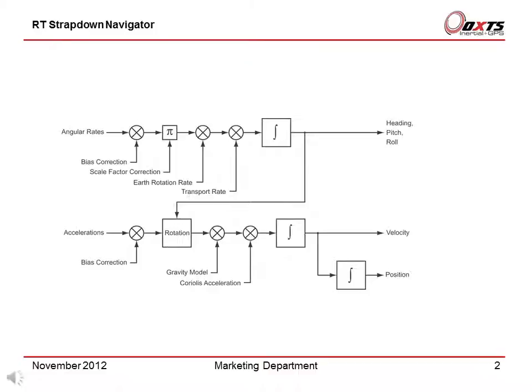Accelerations are corrected for bias and rotated by heading, pitch, and roll. Gravity and Coriolis acceleration are removed. Then the accelerations are integrated to velocity and integrated again to position. All the integrations can have corrections applied by the Kalman filter to correct any drift that occurs.